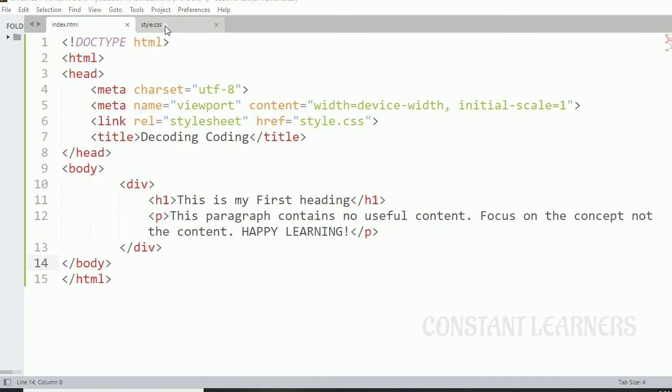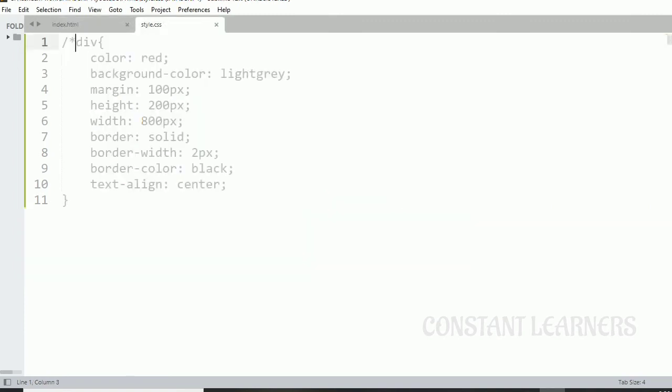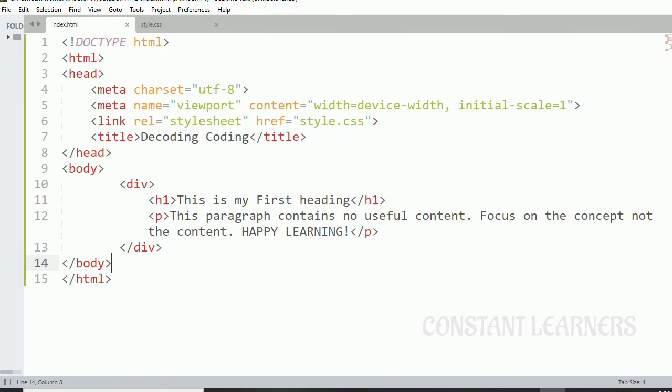Now I haven't styled it yet. See, everything in the style.css is commented, so there's no style yet. Let's save this. And here you can see that I have this. This is my first paragraph, my heading and my paragraph.